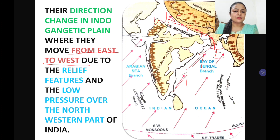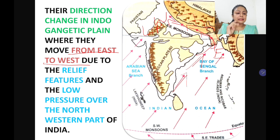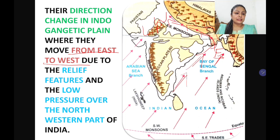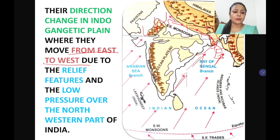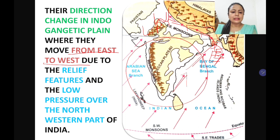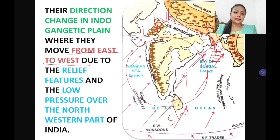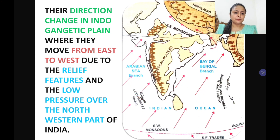There are two reasons for this direction change. First, the presence of the Himalayas, and second, the low pressure in the northwestern part which attracts the winds from east to west. Additionally, when the winds strike the Arakan Yoma in Myanmar — which is an extension of the Himalayas — they get deflected towards the Indian subcontinent and start flowing from east to west. So in the southern part of India they blow from the southwest, but as they reach the north they get deflected and move from east to west.